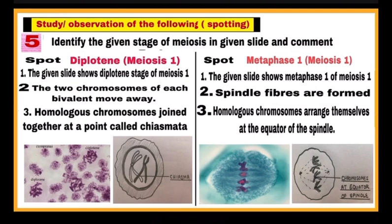Next category: you have to identify stages of meiosis in a given slide and then comment. Meiosis stages have to be identified through the microscope — a slide will be shown to you. Point one: see which stage is shown — this slide shows the diplotene stage of meiosis 1. Point two: in this stage, two chromosomes of each bivalent move apart. Point three: but these homologous chromosomes join together at a point called chiasmata. This is a very important point in the diplotene stage. Then draw the diagram and show the chiasma.